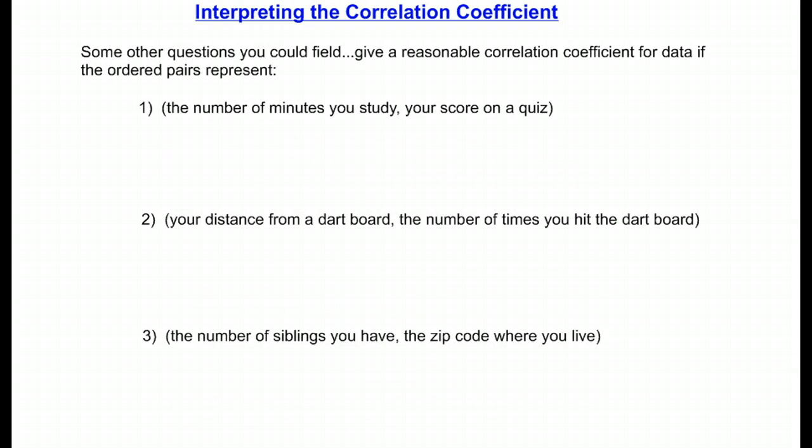Finally, a few more questions about the correlation coefficient. If you had an ordered pair where you had the number of minutes you study and then your score on a particular quiz, let's decide what would be a reasonable correlation coefficient. Now, as the number of minutes you study goes up, we expect that the quiz score would go up. So, I'm expecting a positive value. And, clearly, I think there's quite a close connection between how much you study and how well you do on the quiz. So, I would even make this number be a pretty high number, close to one.